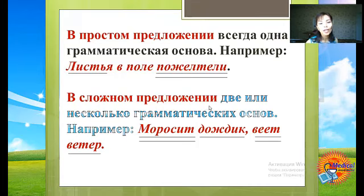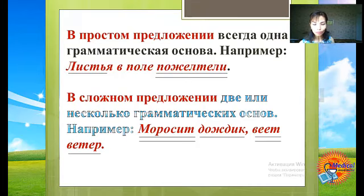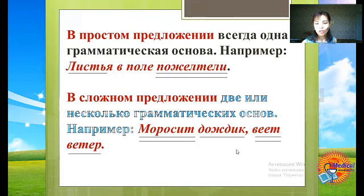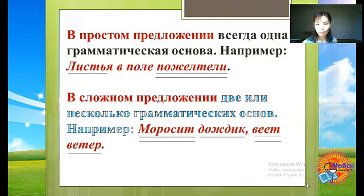В сложном предложении две или несколько грамматических основ. Например: «Моросит дождик, веет ветер». «Дождик» – подлежащее, «моросит» – сказуемое. «Ветер» – подлежащее, «веет» – сказуемое. Здесь два подлежащих и два сказуемых, поэтому это предложение называется сложным.